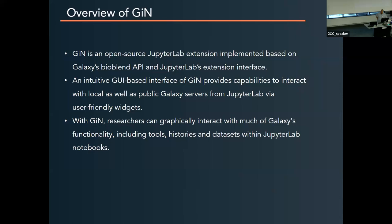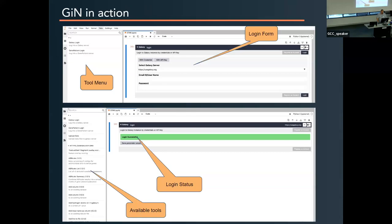JIN is an open source JupyterLab extension. On the back end it's using Galaxy's BioBlend package to interact with the API, and it's a custom JupyterLab extension interface. It gives us actual GUI access — for example to Galaxy tools, datasets, histories, and so forth — all within JupyterLab notebooks. This is a standard-looking Jupyter Notebook with the JIN extension loaded. Over on the left-hand side, you can think of this as our tool menu, very similar to Galaxy.